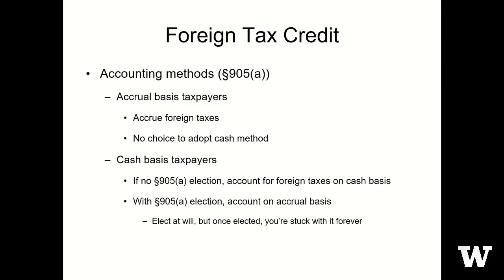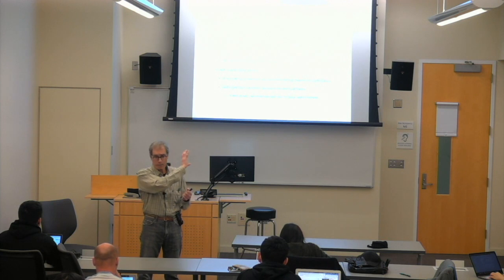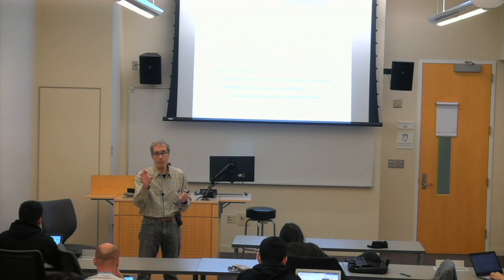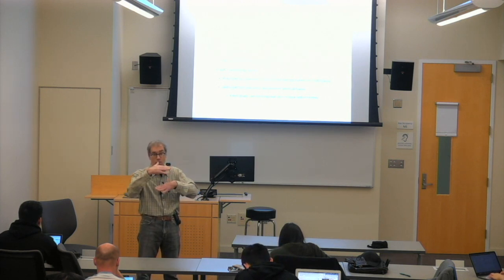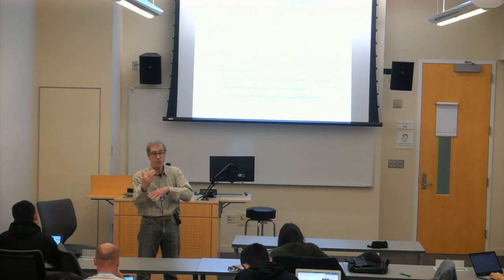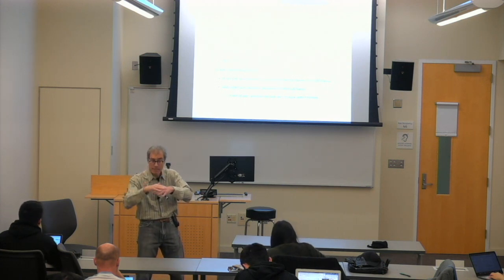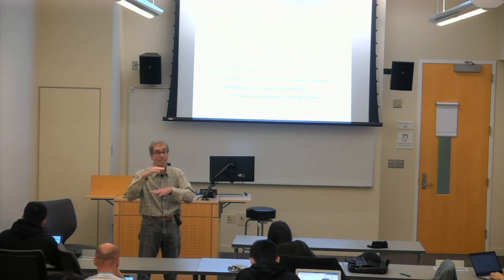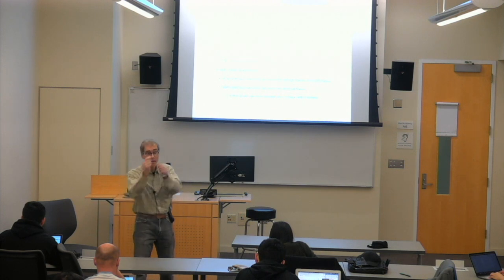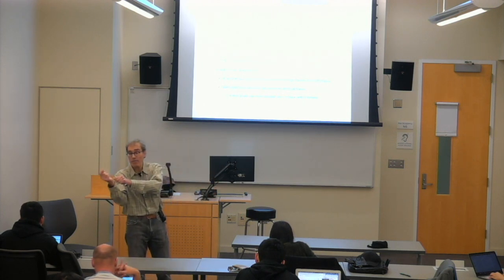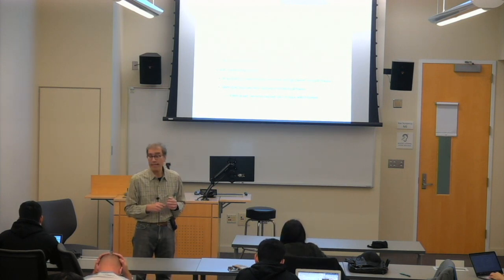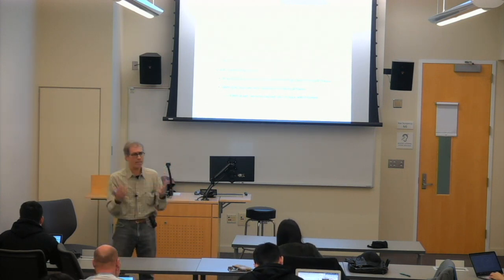Why is that important? It's important because, as we saw in the prior slide, how much tax we paid each year allowed a foreign tax credit for that year. But also, if the foreign tax results in an excess foreign tax credit position, it starts the counting of the carry-back one year and the carry-forward for 10 years. How do we decide what method you're on?